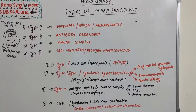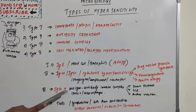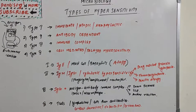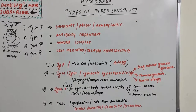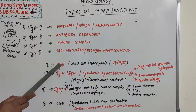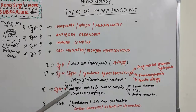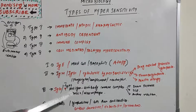Now let's summarize all four categories. For the antibody involved: Type 1 is IgE; Type 2 is IgG and IgM; Type 3 is IgG and IgM but IgM in very little amount; Type 4 is T cell mediated with no antibody involved. For the type of antigen: Type 1 is exogenous; Type 2 is cell surface; Type 3 is soluble antigen; Type 4 involves tissues and organs.